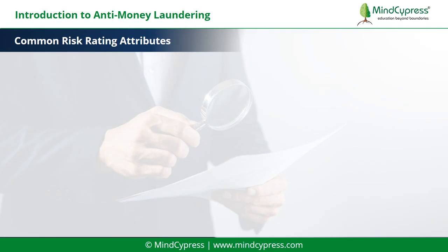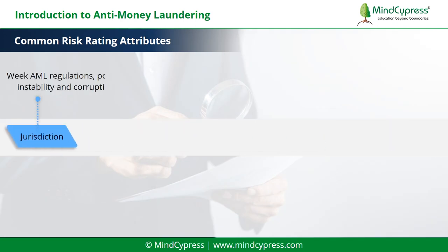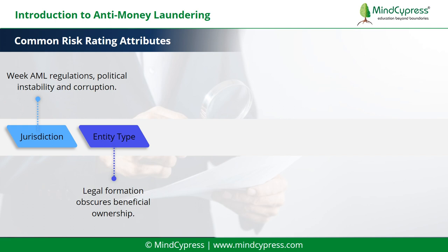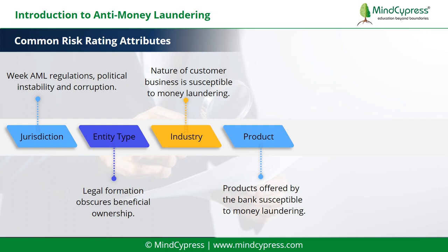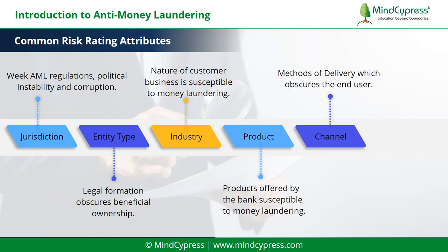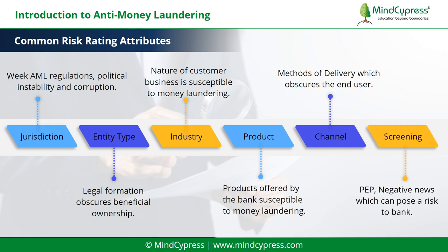Let's understand common risk rating attributes: Jurisdiction — weak AML regulations, political instability and corruption. Entity type — legal formation obscures beneficial ownership. Industry — nature of customer business is susceptible to money laundering. Product — products offered by the bank susceptible to money laundering. Channel — methods of delivery which obscure the end user. Screening — PEP, negative news which can pose a risk to the bank.